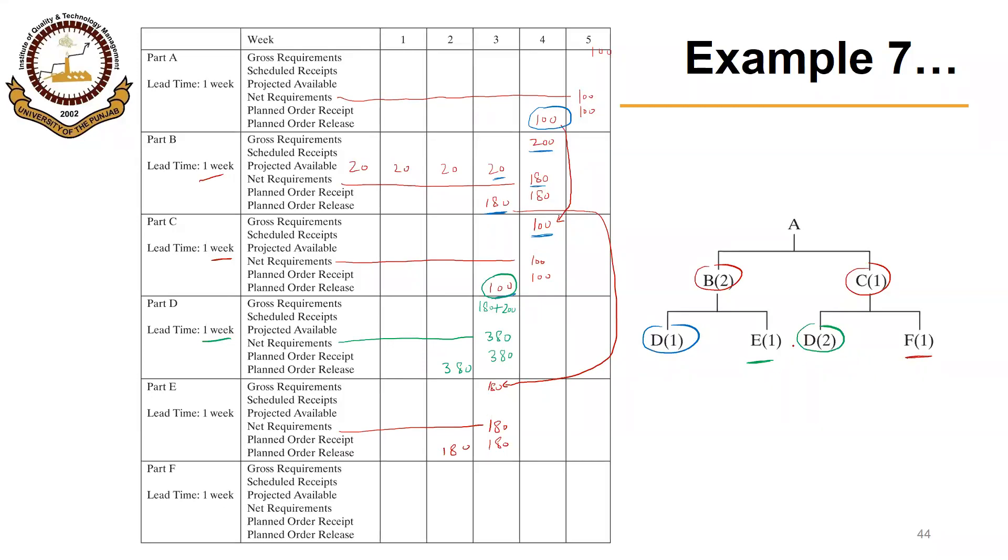F is the component of C. So this 100 from C will be the gross requirement for F in week 3. Net requirements will be 100 as well. Planned order receipt of 100 and planned order release of 100 in week 2.